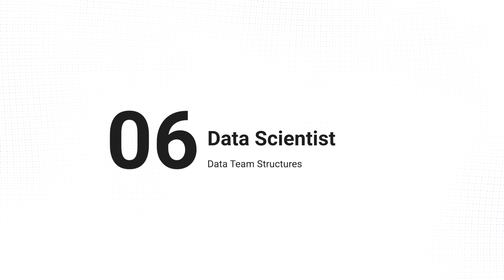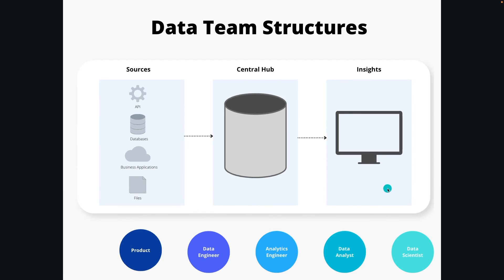Last but not least is the data scientist. Data science, for many years, gets confused with data engineering, but it's not the same thing. Data science is more machine learning, predictive, statistical, and math-driven type of data analysis. It's typically based on the structure and back-end the data engineer has designed and modeled, enabling predictive analytics using algorithms and statistics — work the data engineer wouldn't be concerned with and the data analyst probably isn't doing. Analysts are more focused on dashboards, reporting, and custom models.